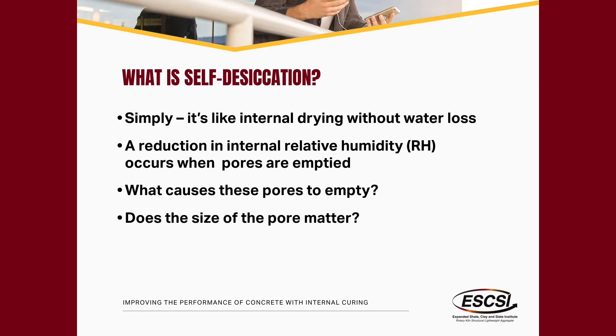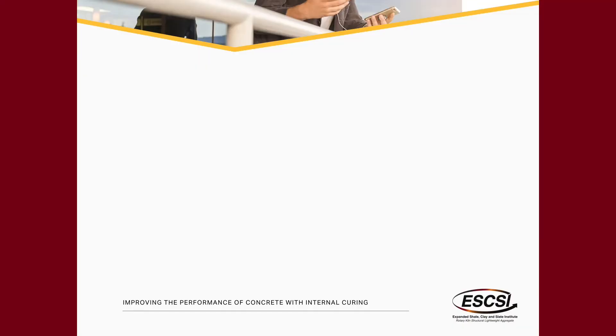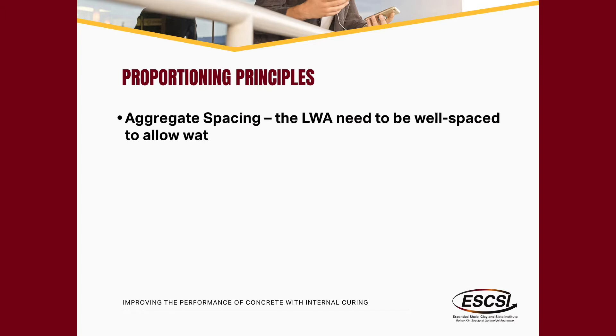What causes the pores to empty is chemical shrinkage, and this happens every single day for anyone using Portland cement — it doesn't matter what color the truck is. Now, does this happen irrespective of water-to-cement ratio? Yes. At w/c of 0.6 it happens, but there are so many large pores that the water stays more active. In lower w/c systems — 0.40, 0.35 — there are far fewer large pores, so losing that small amount of water makes a much bigger difference. That's why this becomes a big issue in high-performance concrete.